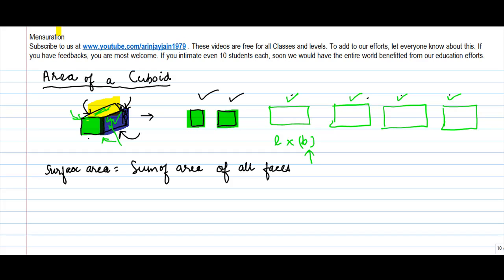Okay, let's assume for a moment that this is L and this is B. So basically what you will have is that for this portion and the back portion, the area will be equal to length into breadth plus length into breadth.